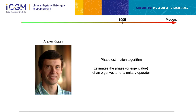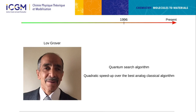Other important developments include the quantum phase estimation algorithm, which estimates the phase of an eigenvector of a unitary operator — used in quantum chemistry and other fields. Grover's algorithm provides a quadratic speedup for quantum search, which is not an exponential speedup but is still very useful. We shouldn't always aim for exponential speedup; polynomial speedup is already interesting in many topics.